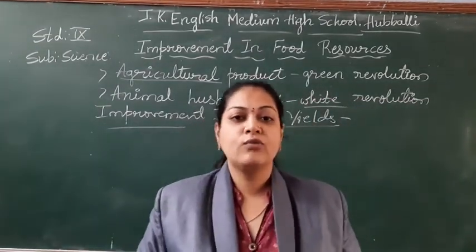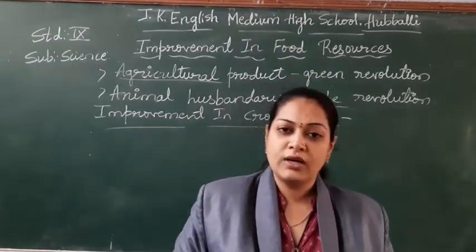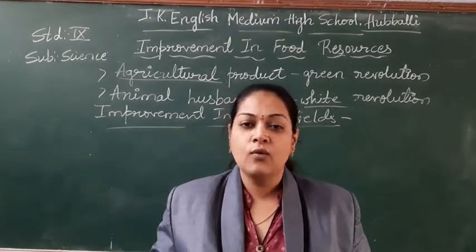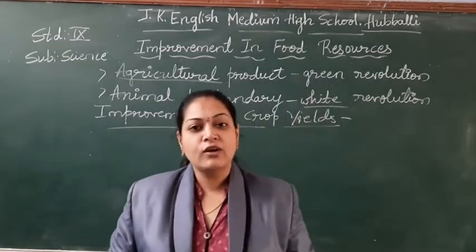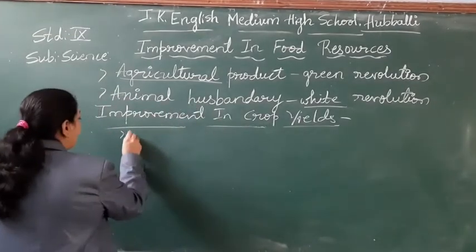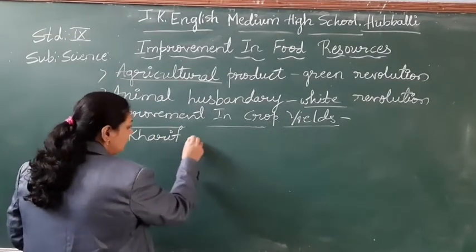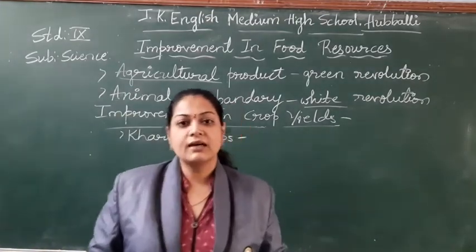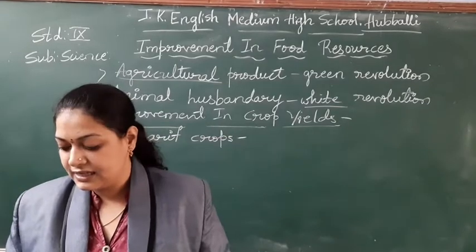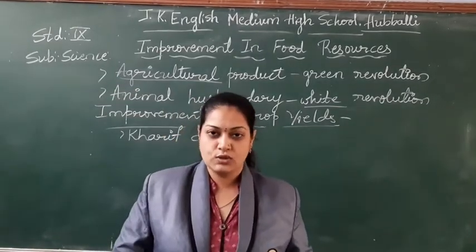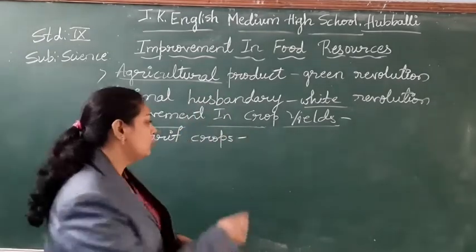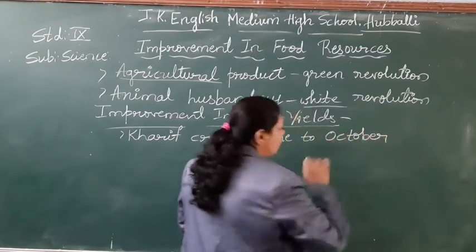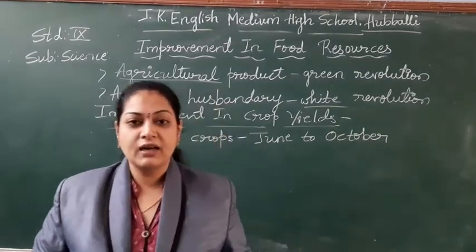First, if we want to improve the quantity and quality of the crops, we should understand that few crops can grow in the rainy season. The crops which can grow in the rainy season are called rainy crops. The rainy season is from June to October.